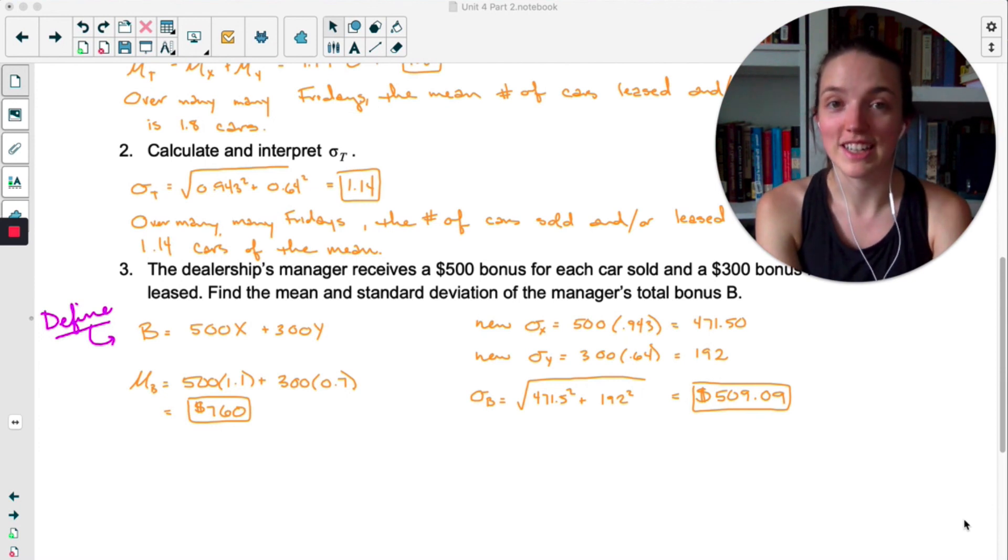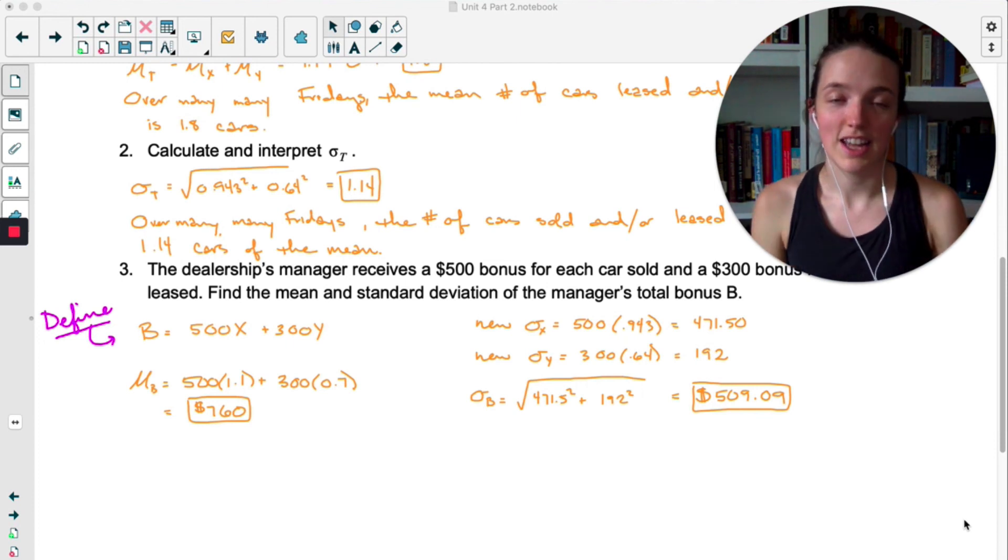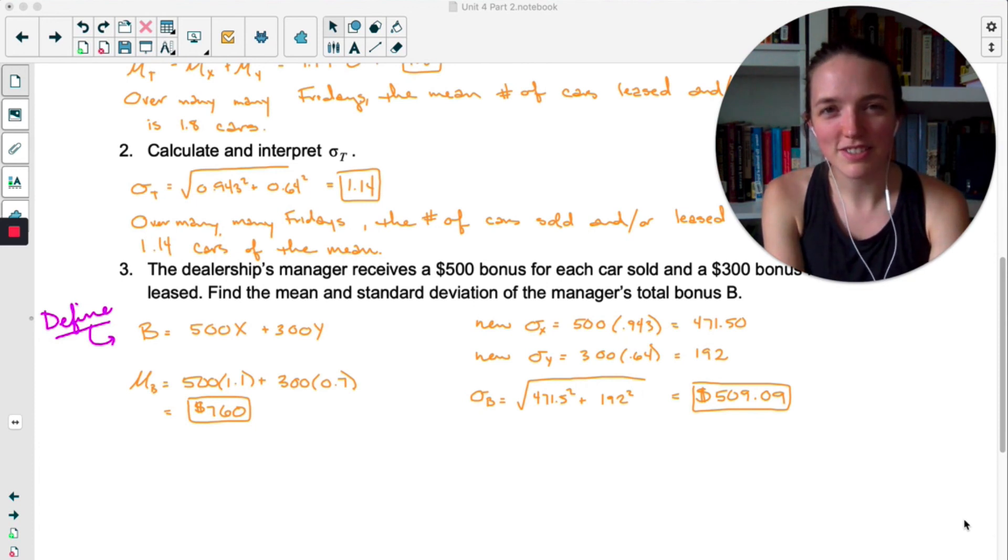Knowing how to transform and combine random variables can save you so much time when you're calculating mean and standard deviation, and we are going to need the mean and standard deviation in future lessons, so it's really important you know how to do it. The more practice you do, the easier it will be to remember when to multiply, when to add, when to do nothing, and when to add standard deviations. The answer is never. Is there too much of that meme in this video? Maybe, but sorry not sorry.